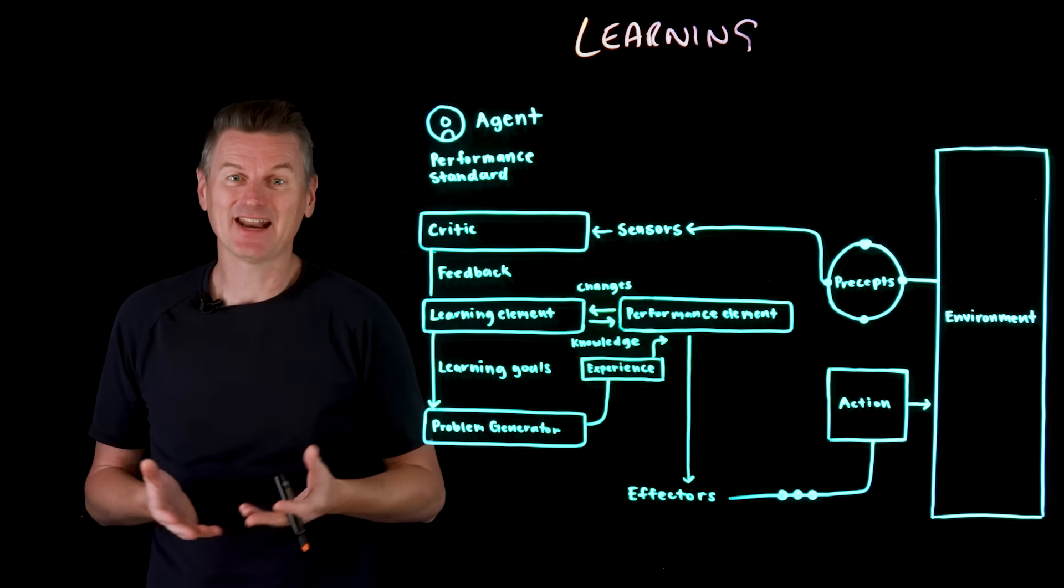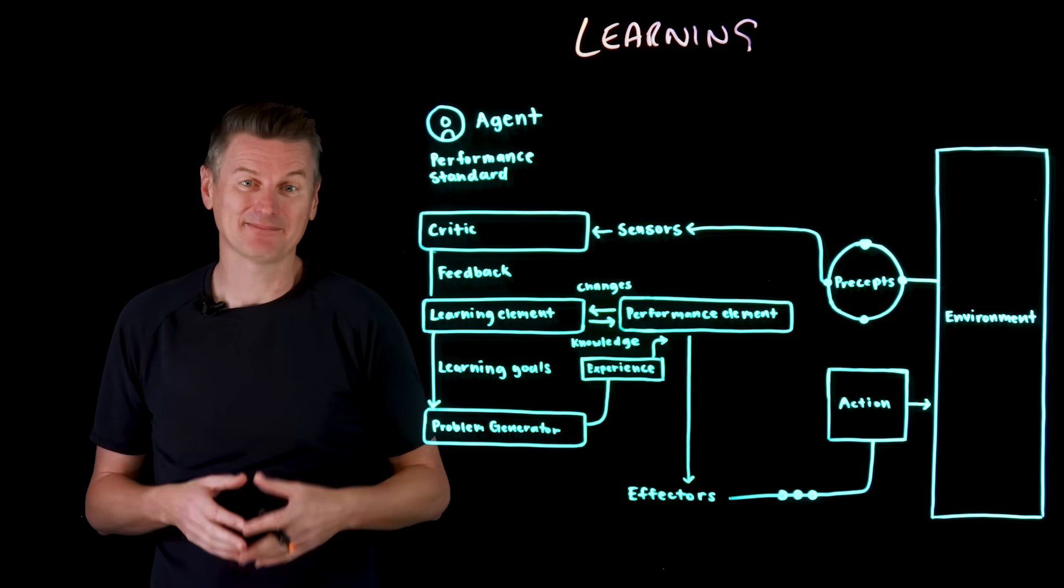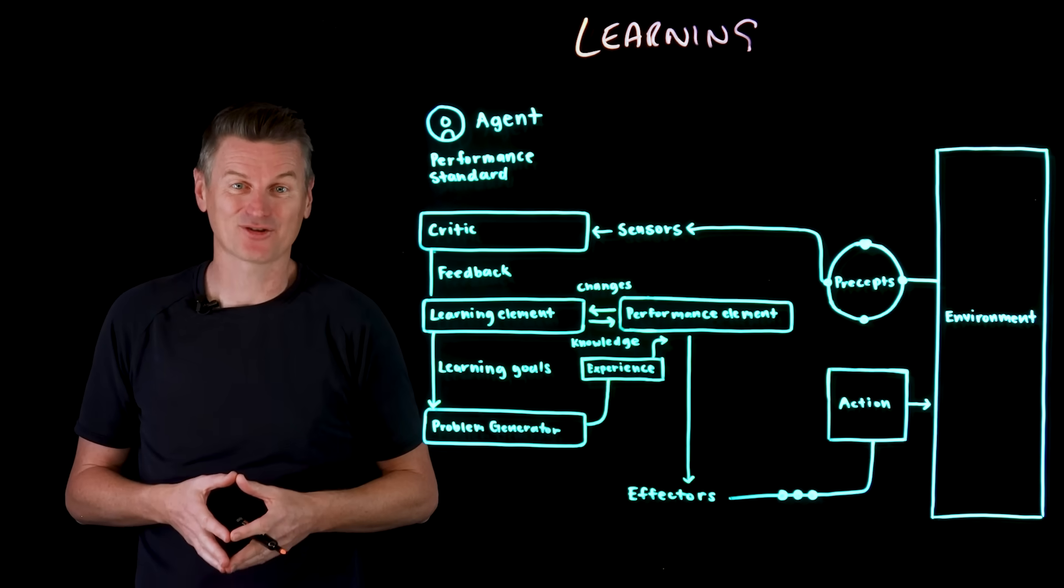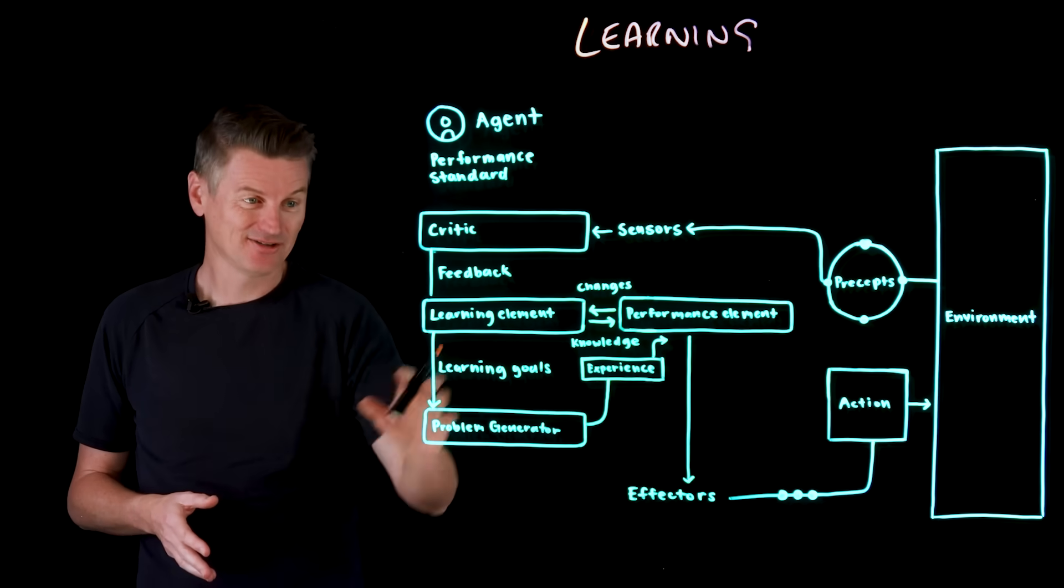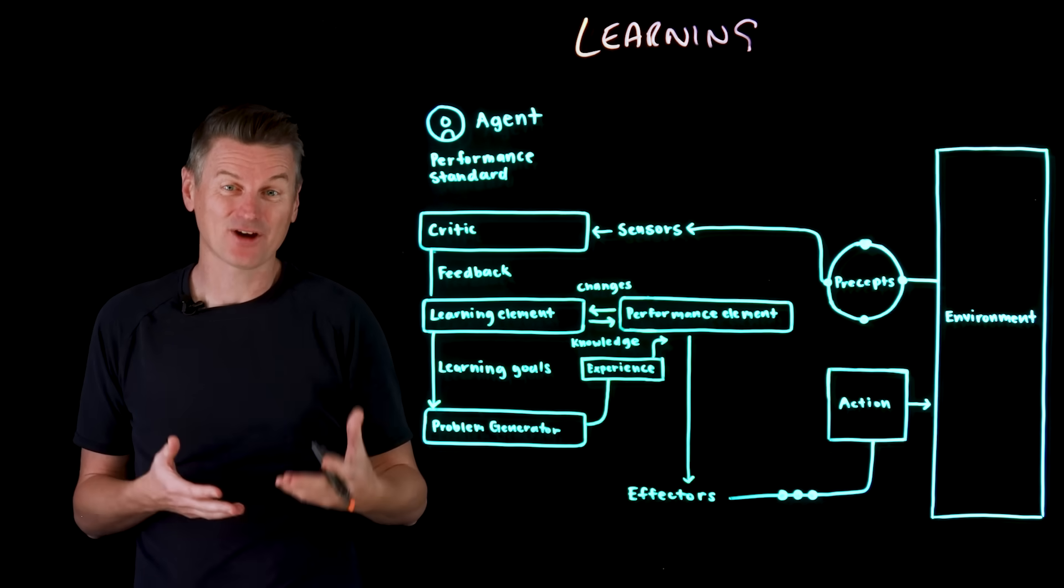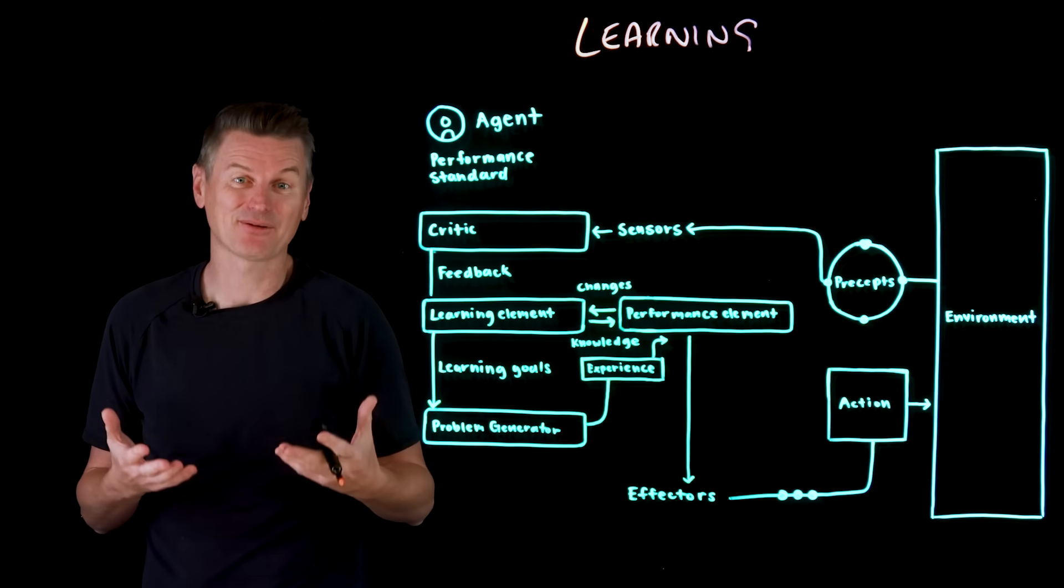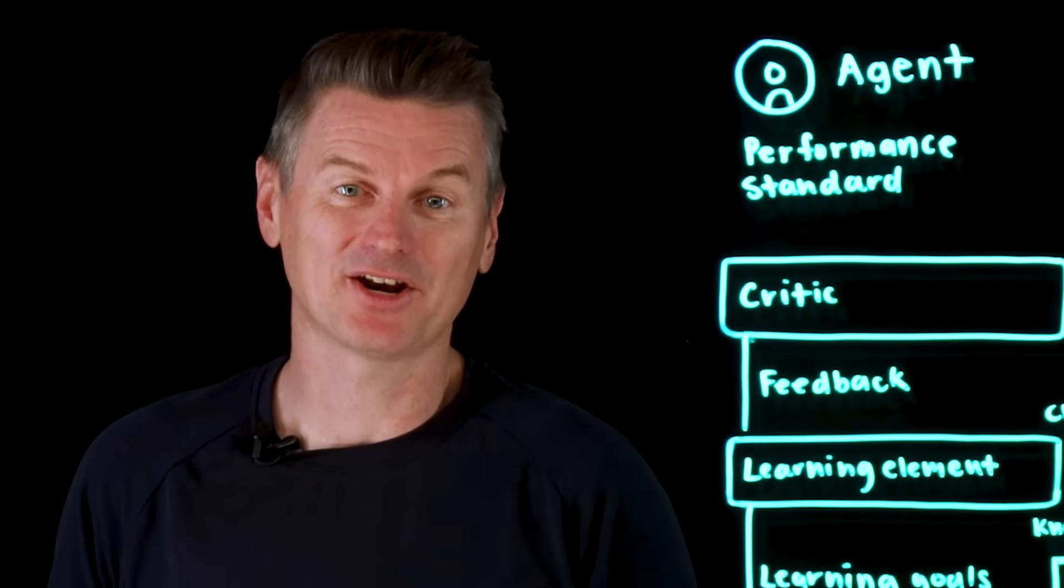So think of an AI chess bot. The performance element plays the game using current learned strategies. The critic sees that it lost the match. The learning element adjusts its strategy based on the outcomes of thousands of games, and the problem generator suggests new moves that it hasn't explored yet.